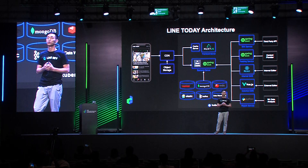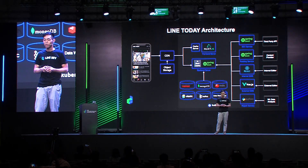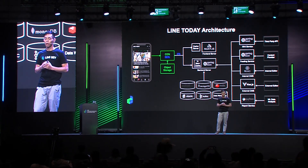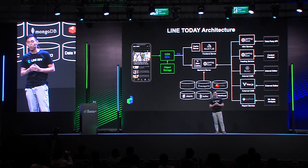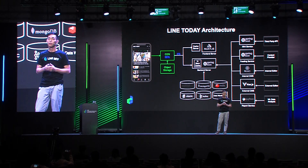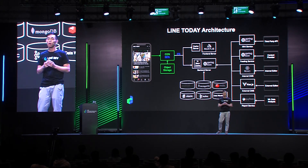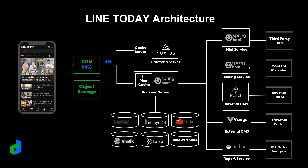To handle such numerous requests and users in Line Today, here is our server architecture. When the user is accessing Line Today's web page, your browser sends a request to our server. Between the client and the server, there is a CDN — Content Delivery Network — which is a geographically distributed network of proxy servers and data centers. The object storage is not within our internal server either; it will instantly return images or videos to the user, which consumes lots of network traffic. According to the statistics, only 4% of traffic will hit the internal server, meaning 96% of traffic is handled and returned by CDN.